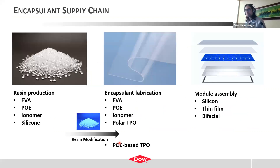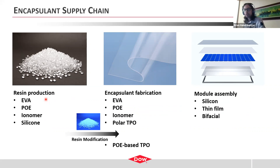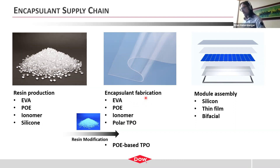Up until now we've been focused on resin production. The encapsulant supply chain has three stages: resin production, where the raw material resin is manufactured as pellets (or in the case of silicone, a liquid pre-polymer); then encapsulant fabrication; followed by module assembly. The encapsulant fabrication step may also involve an additional step depending on the material, which I'll cover in a few slides.